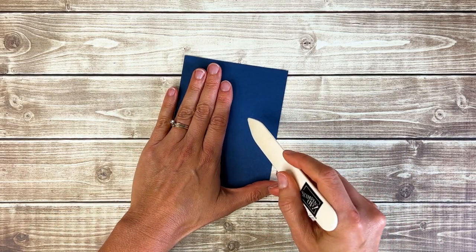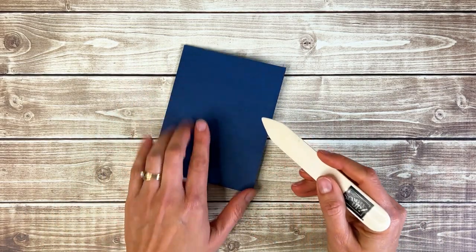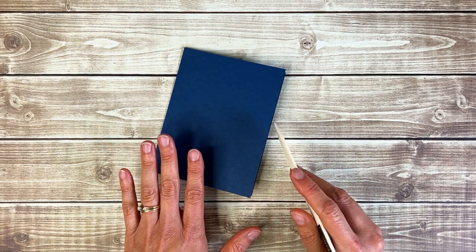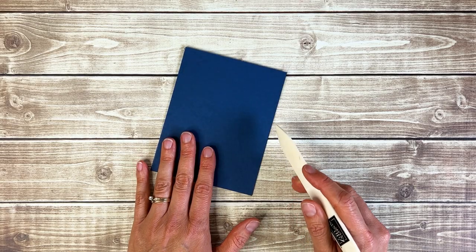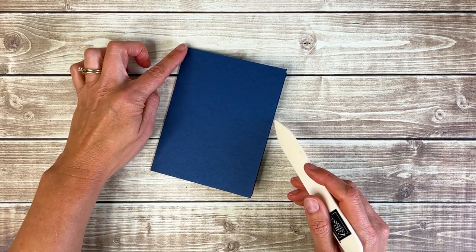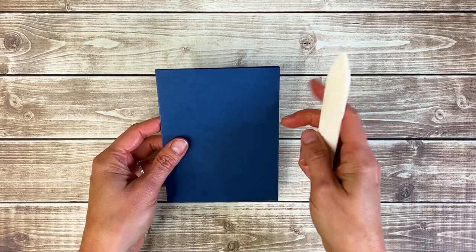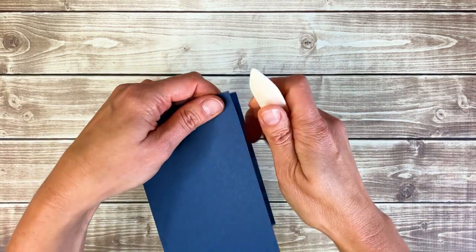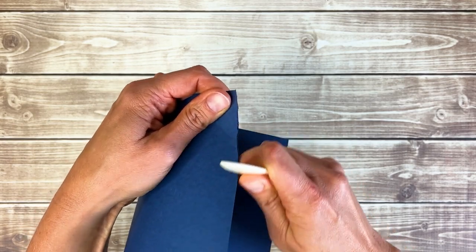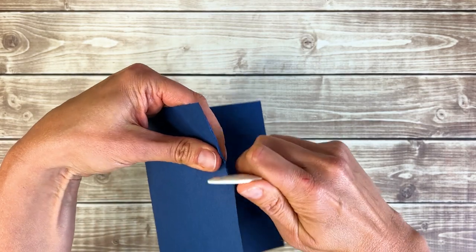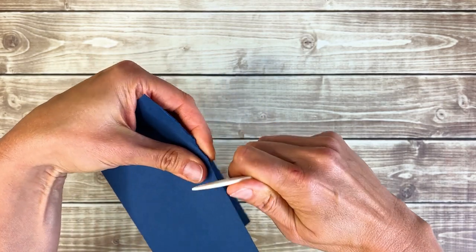Sometimes you might want to use a ruler to make a score line, usually if you're doing it on an angle or if you have a bigger piece of paper than can fit in your paper trimmer. But I mostly use it for giving my card base a nice crease and then you can also use it to rough up the edges of your card stock which is a fun technique especially if you don't have very many tools or supplies.